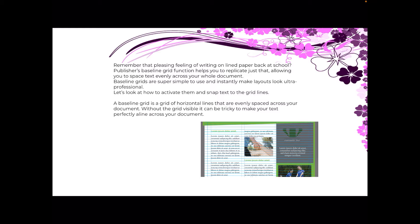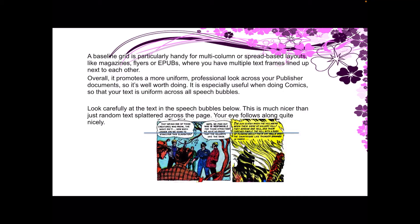A Baseline Grid is a grid of horizontal lines that are evenly spaced across your document. Without the grid visible, it can be tricky to make your text perfectly align across your document, especially in multi-column documents. A Baseline Grid is particularly handy for multi-column or spread-based layouts, like magazines, flyers, or epubs, where you have multiple text frames lined up next to each other.